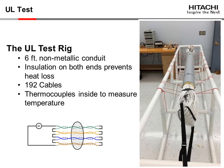How does UL test a cable for LP designation? The test rig, as seen in the picture to the right, is a 6-foot non-metallic conduit with 192 cables placed within. The conduit has insulation on both ends to prevent heat loss, and there are thermocouples placed inside the bundle to record temperature.